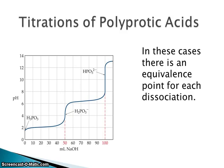Briefly, for titrations of polyprotic acids — these are more complicated — we see an equivalence point for each dissociation, for each H⁺ being consumed. In a triprotic acid such as H₃PO₄, we'll actually see more than one inflection point.